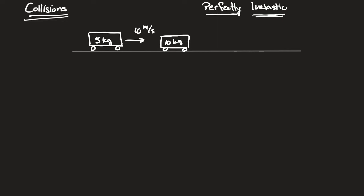Perfectly means the two objects instantaneously join together. They use the word instantaneously to indicate that the cars don't bounce around wasting energy — they merely join together and become one object with a combined velocity. In a perfectly inelastic collision, the objects stick together after the collision. Usually they'll just say the two objects couple or stick together.